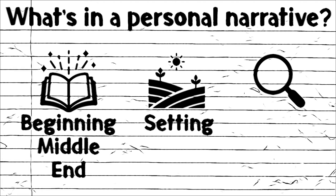Setting is very important in a personal narrative so that your readers know where they are — you have to describe where you are. Another thing is details. You want to give a lot of details so that your readers can see what's happening or understand the story. You can do this by using adjectives or figurative language.